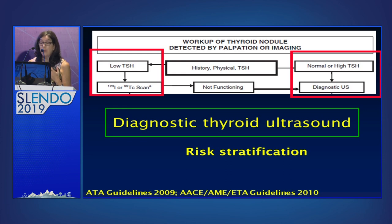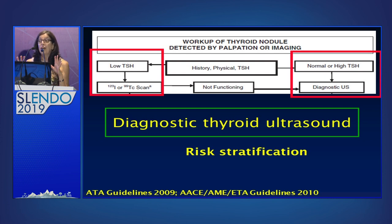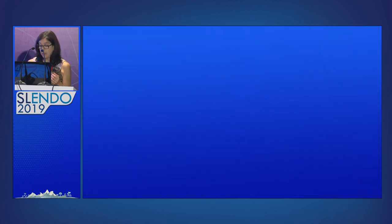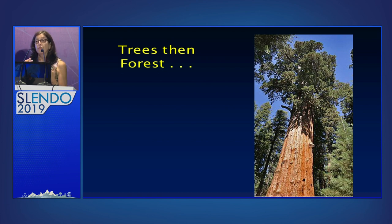Because if the TSH is low, that's when we think about the fact that the nodule could be functioning, and we do a scan to evaluate the potential for a functioning nodule causing thyrotoxicosis. But if it's not, we do a diagnostic ultrasound. The main reason for ultrasound is risk stratification, because not every nodule requires a fine needle aspiration biopsy. So we use the ultrasound imaging to help us decide.